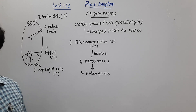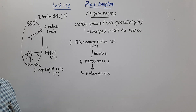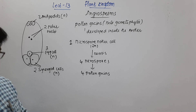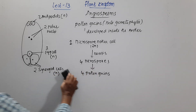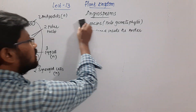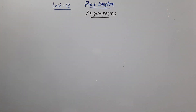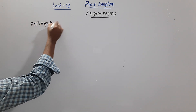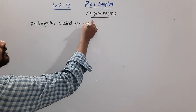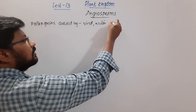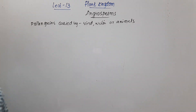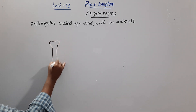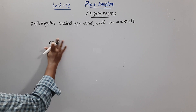These pollen grains are released from the anther and are carried by wind, water, or animals. Animals play a very important role in angiosperms in transferring pollen grains. Once the pollen grains are carried over, they come and settle on the stigma.